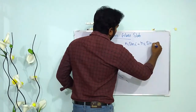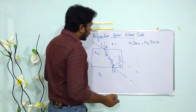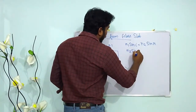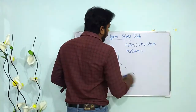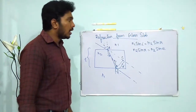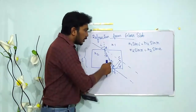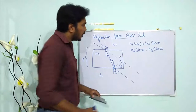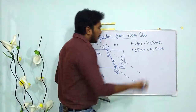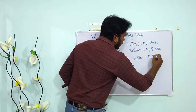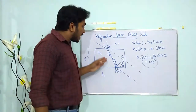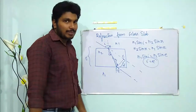At point A we can write: n₁ sin i = n₂ sin r. At point B: n₂ sin r = n₁ sin e. Since r equals r at both interfaces, we can equate the two expressions to get n₁ sin i = n₁ sin e. Cancelling n₁, we get i = e — the angle of incidence equals the angle of emergence, as stated.